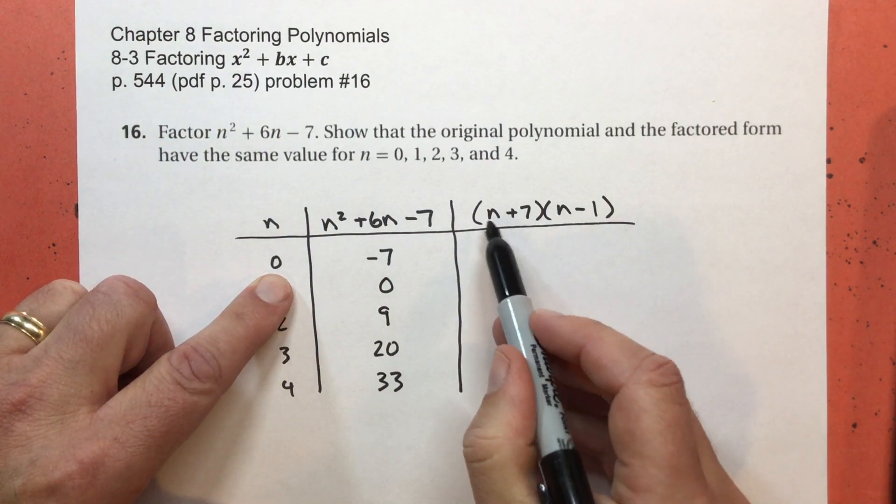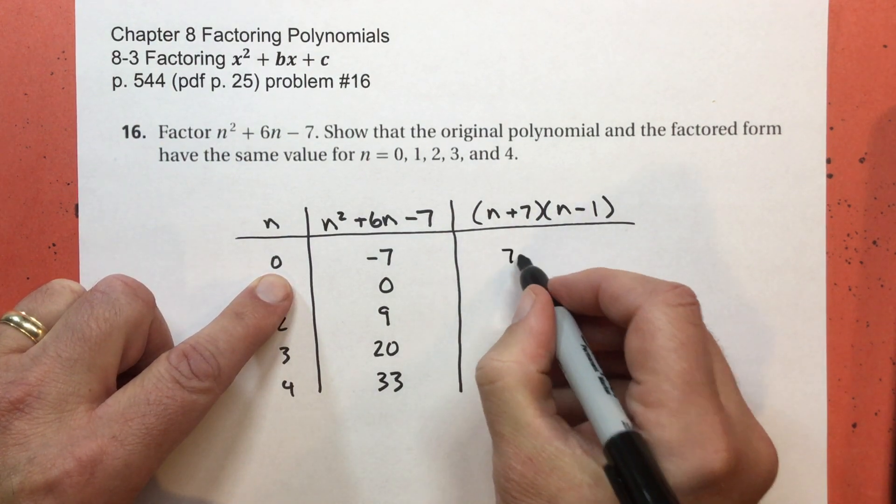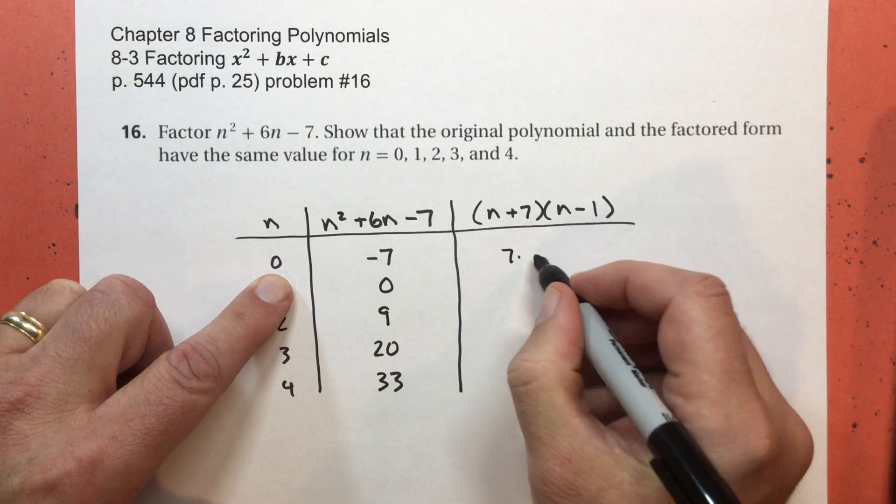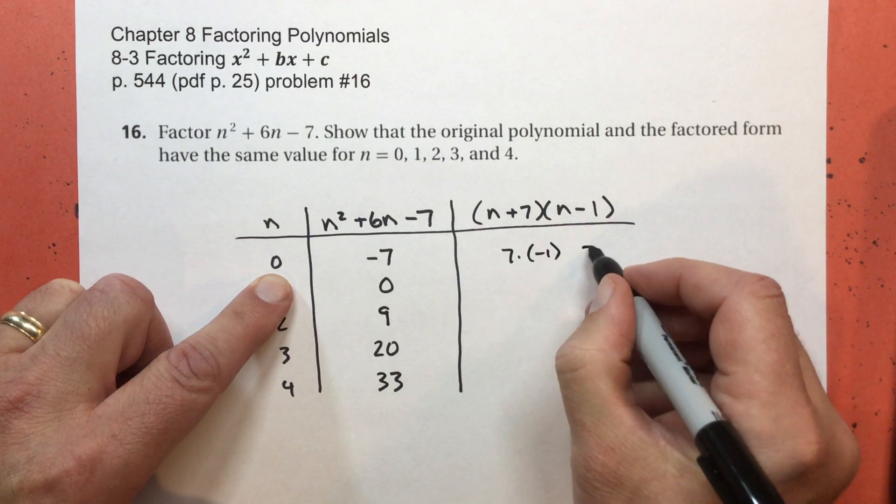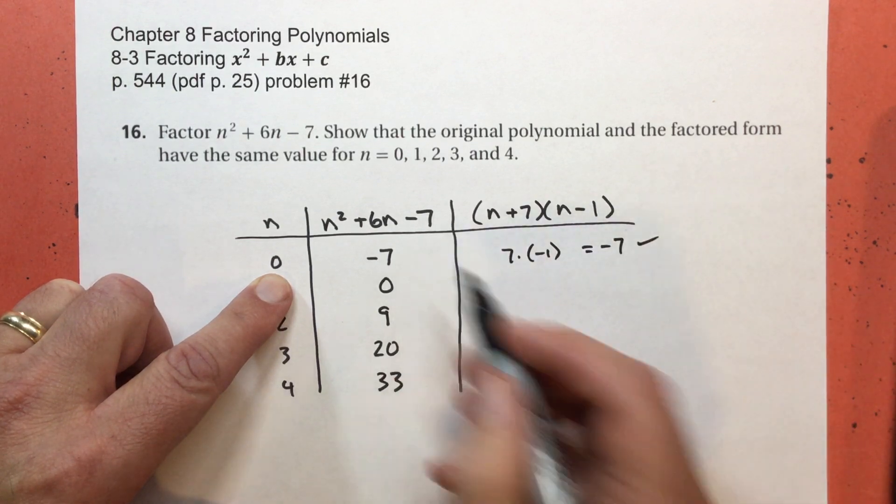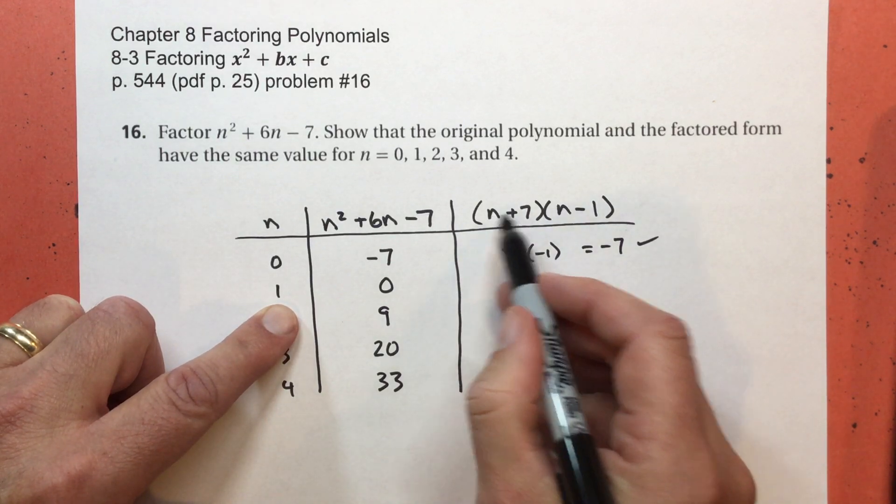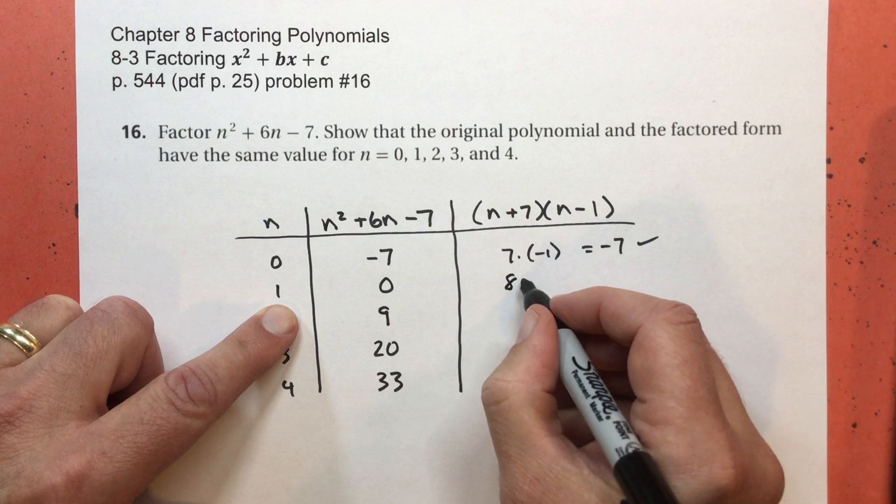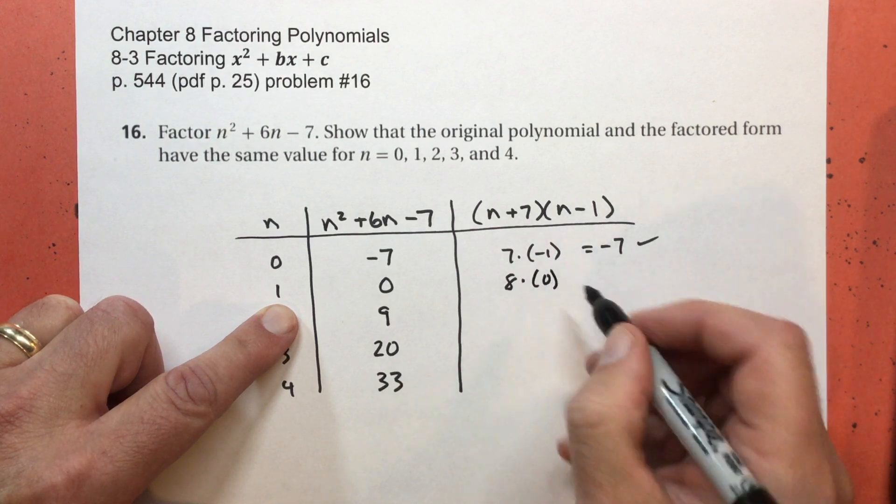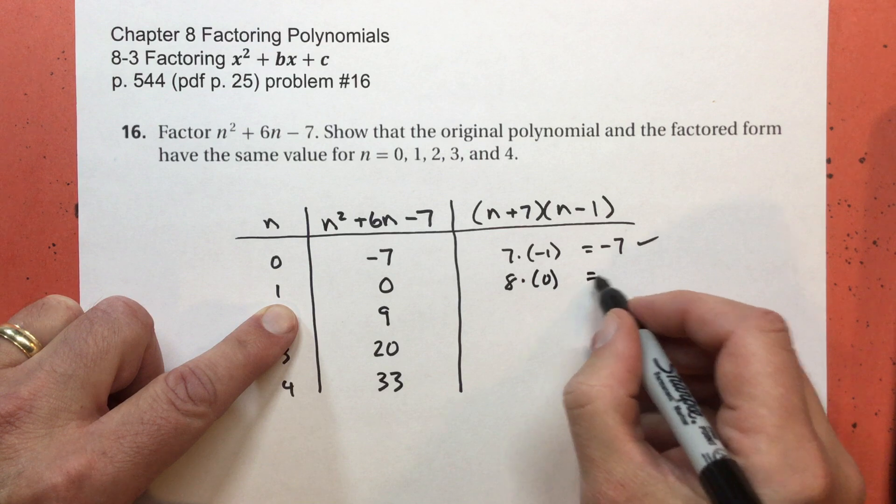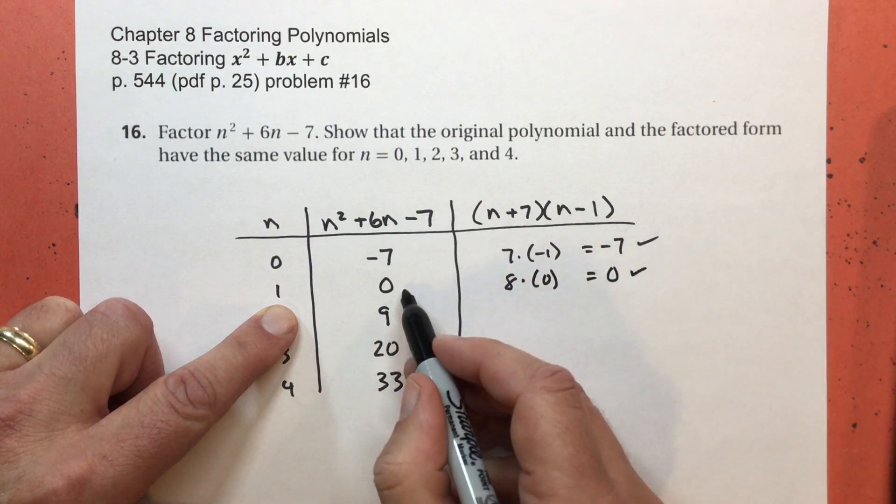All right, let's try 0. That's 0 plus 7, which is 7. 0 minus 1, which is negative 1. That equals negative 7. That's what I got. Let's try 1. That's 1 plus 7, which is 8. 1 minus 1, which is 0. 8 times 0 equals 0. That works.